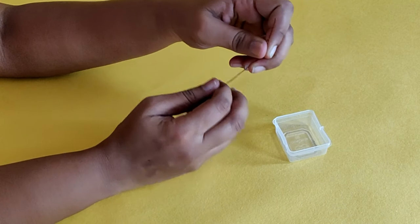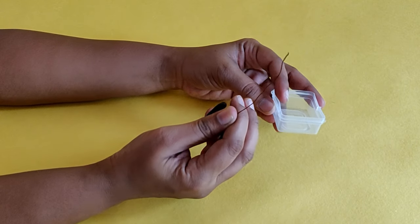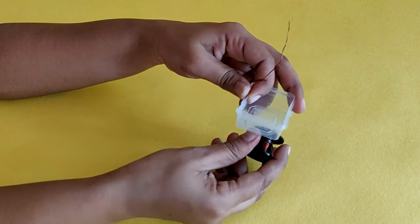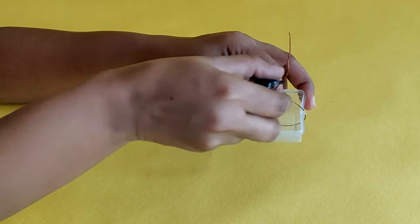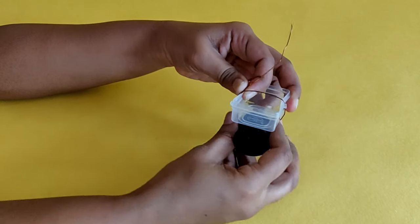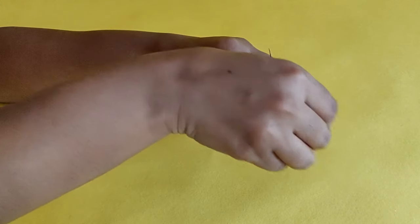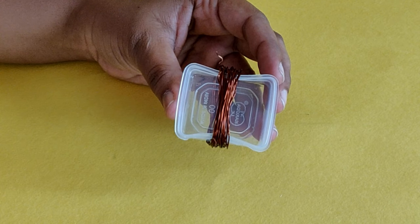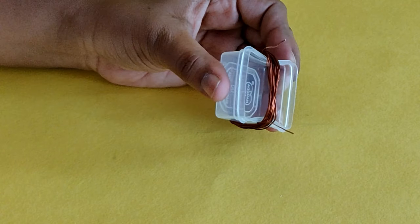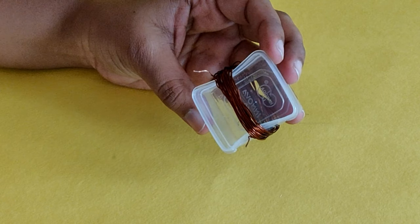To start, take the copper wire and wind it around the plastic box about 25 to 30 times. Keep the ends of the copper wire accessible and scrape off the insulation of the ends of the wire using a cutter.